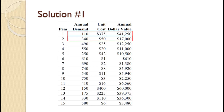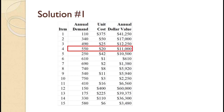For item number two, annual demand of 340 times unit cost of $50 equals $17,000. For item number three, annual demand of 490 times unit cost of $25 equals $12,250. For item number four, annual demand of 550 times unit cost of $20 equals $11,000.